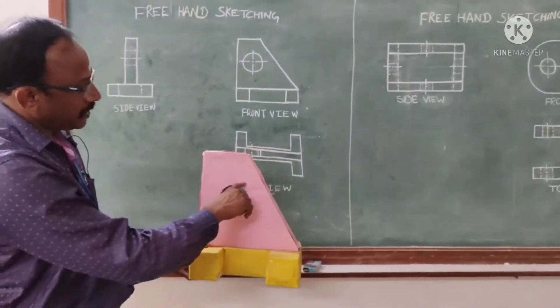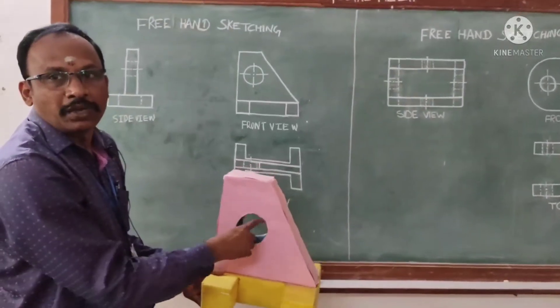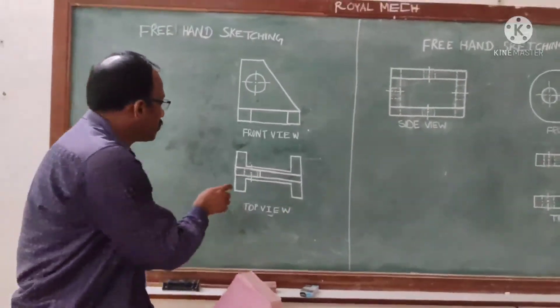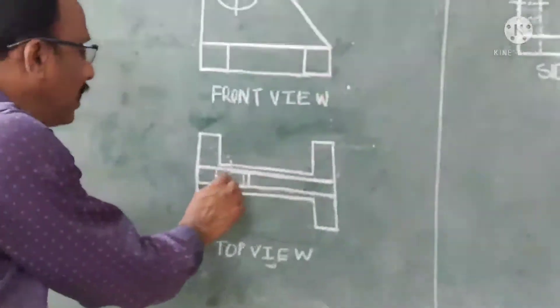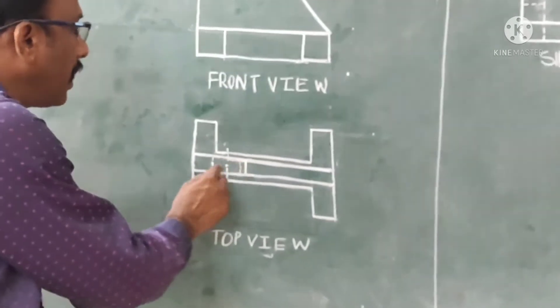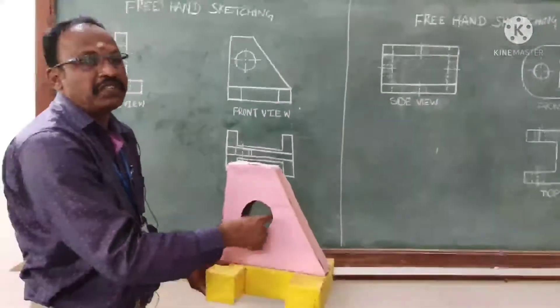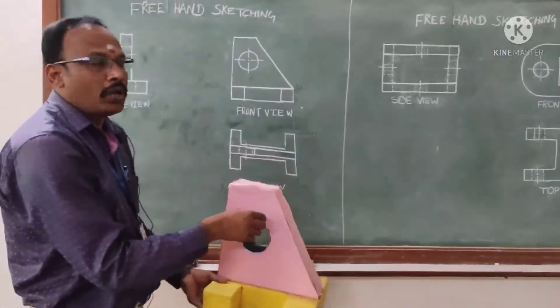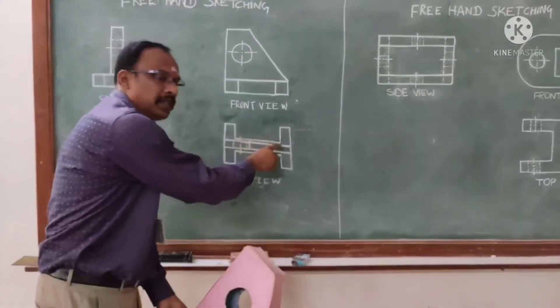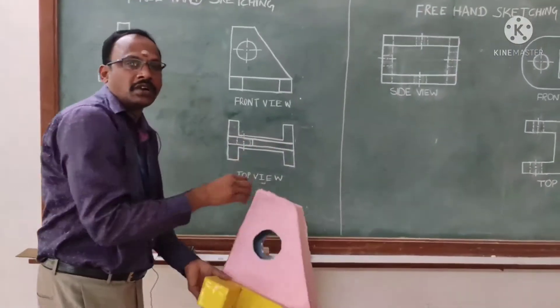This hole is not visible from the top. That's why we draw the center line and two dashed lines representing the invisible hole in the top view. This gives the idea about the top view.